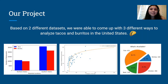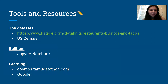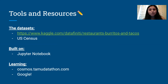Something really important to mention is that we were all beginners and didn't know too much about data science when we came to TAMU Datathon. We took a lot of time cleaning our data and making sure we knew it before we were able to produce all these great visuals. We used two data sets — one showing restaurants that sell burritos and tacos in the United States — plus the U.S. Census, and we built our project on Jupyter Notebook.